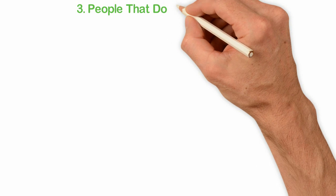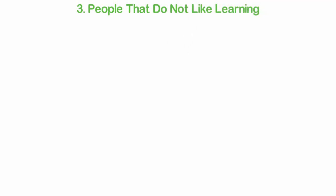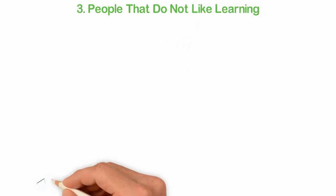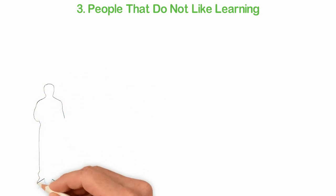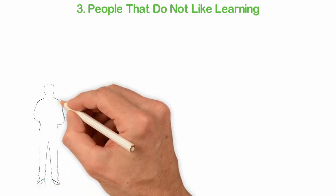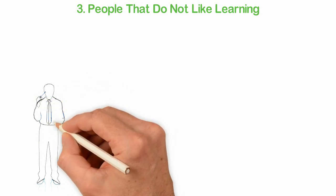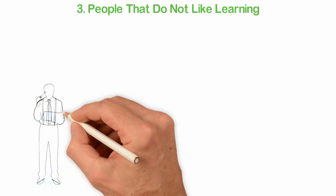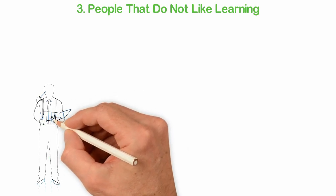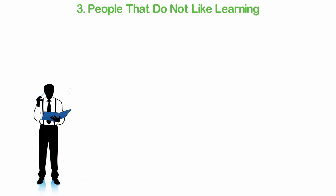Three: People that do not like learning. The first ingredient of success is knowledge. You can't become something you don't know anything about. For instance, if you are not aware that a device called a computer exists, how can you even think of using one? It is what you know and how much of what you know that will determine what you do with it. Successful people are what they are because of the knowledge they possess in their various fields. The more you know, the better your chances of succeeding.